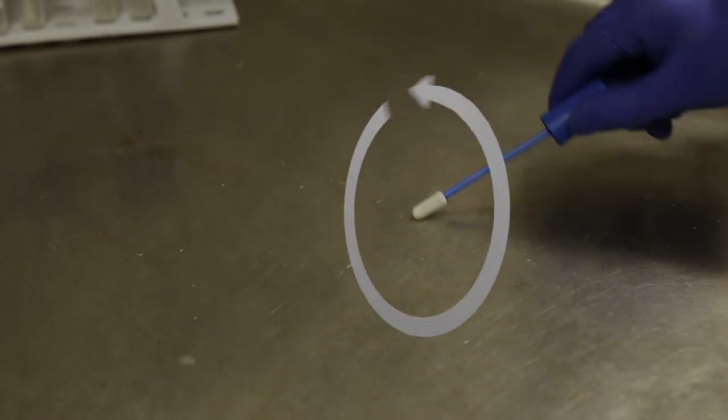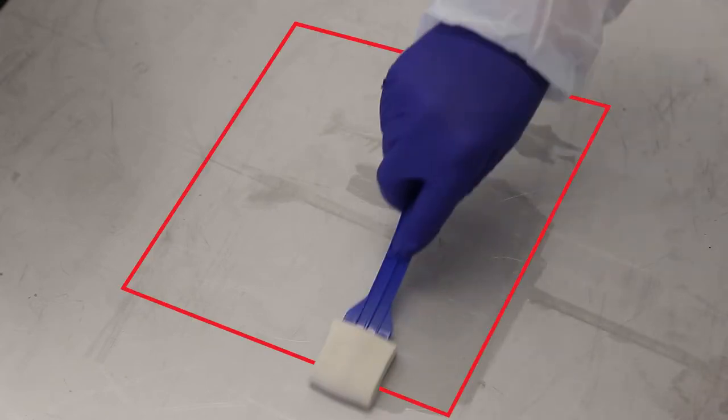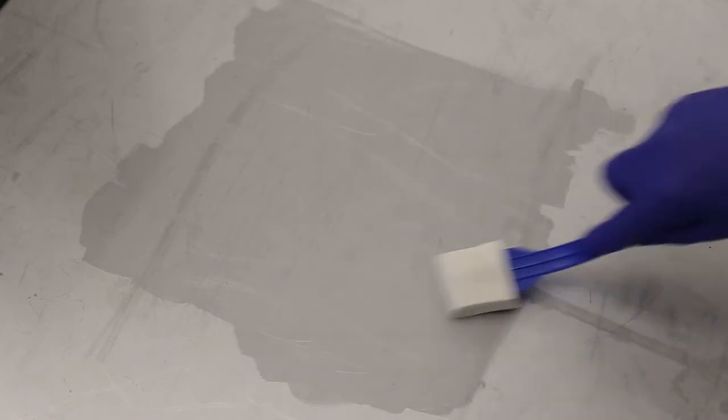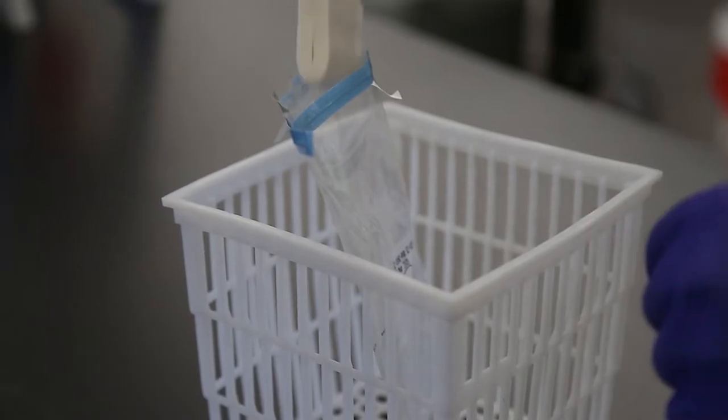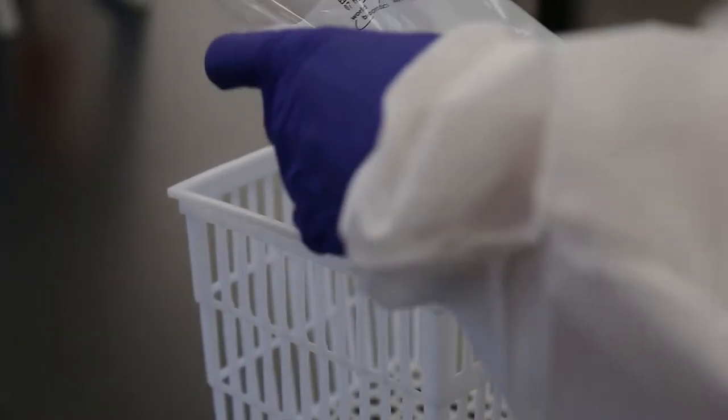While doing this, roll the sampling swab in your fingers. When using a sampling sponge, you should be able to cover an area that is about 12 inches by 12 inches. Apply equal pressure on the sponge as you vigorously sample going horizontally, vertically, and on a diagonal to cover the area.